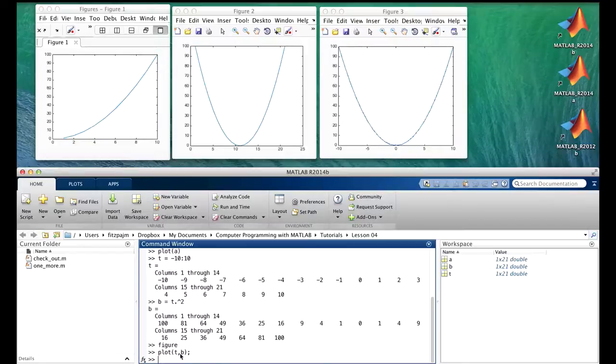There. The arguments are vectors, the t and the b, and they have to be the same length, and they give the horizontal and the vertical coordinates respectively. So now we see that the range, or actually the domain down here, goes from minus 10 to 10 as we wanted it to do, and the range here in the y-axis goes from 0 to 100. Again, MATLAB picked these for us.